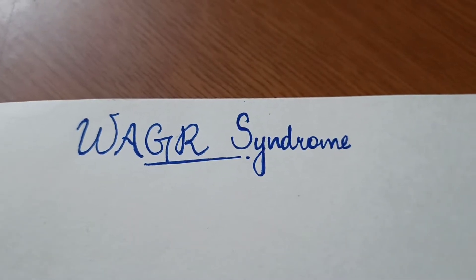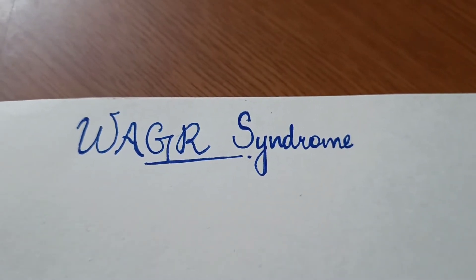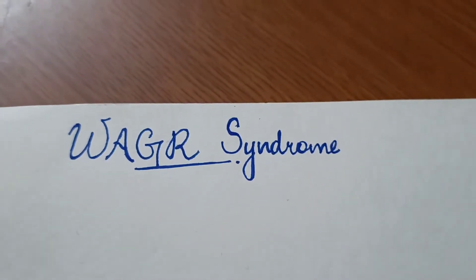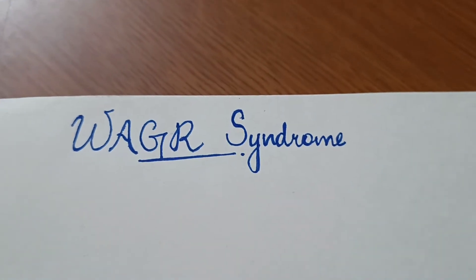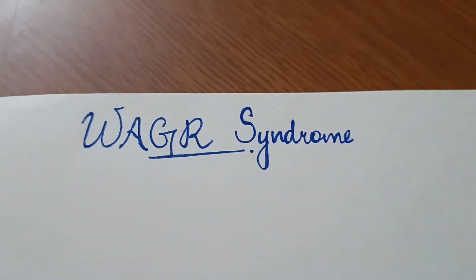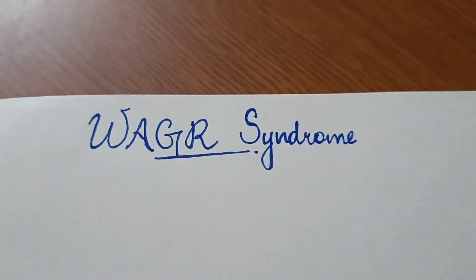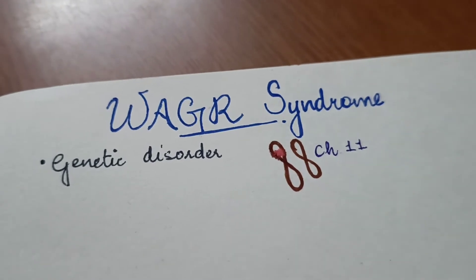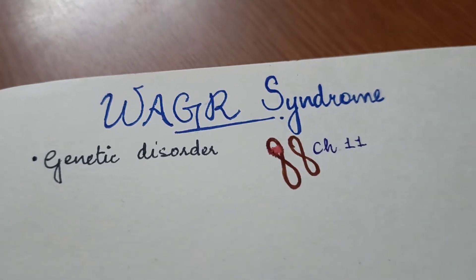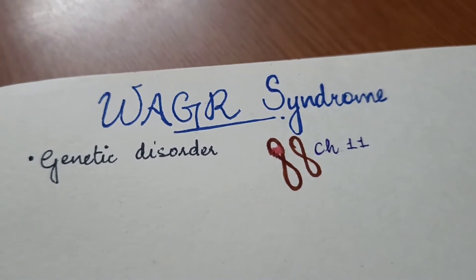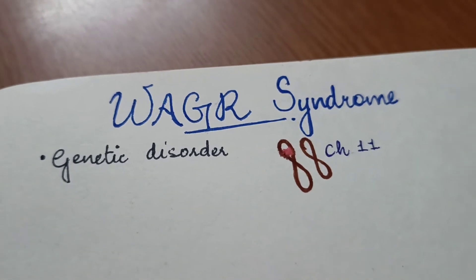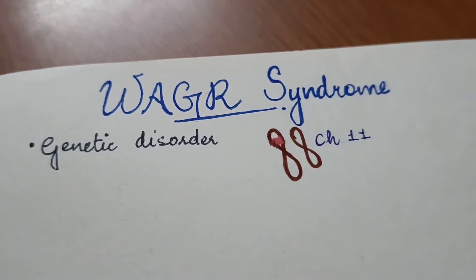Good morning students. Today we are moving to start a new syndrome — WAGR syndrome. WAGR syndrome is a genetic disorder where chromosome number 11 is missing or deleted.